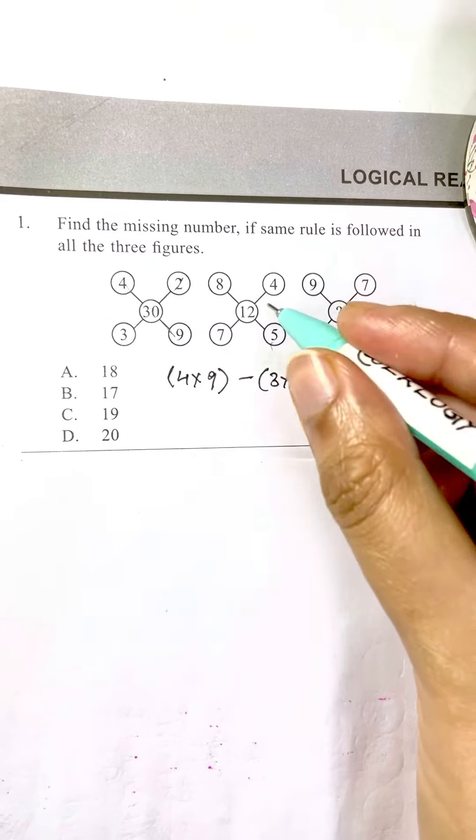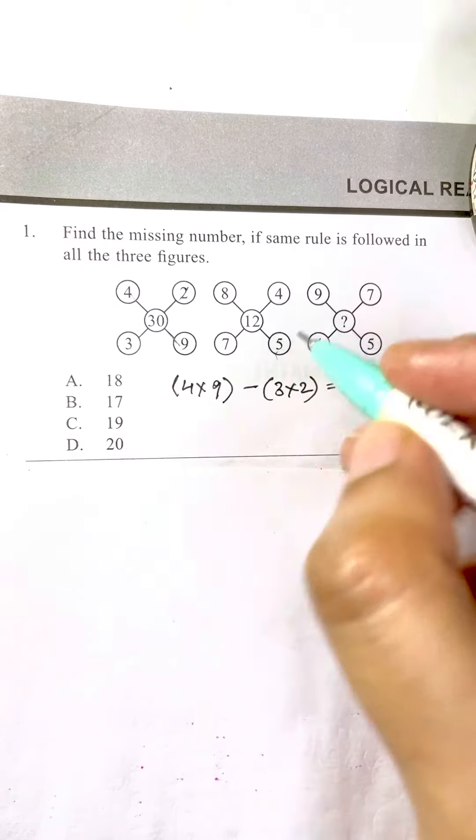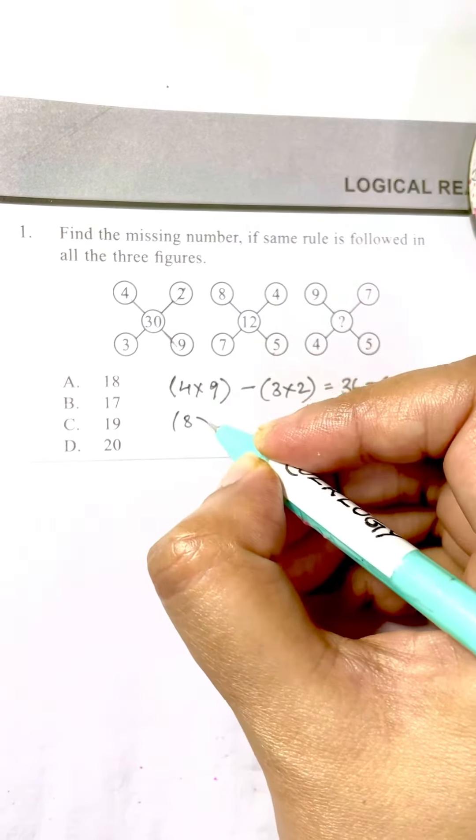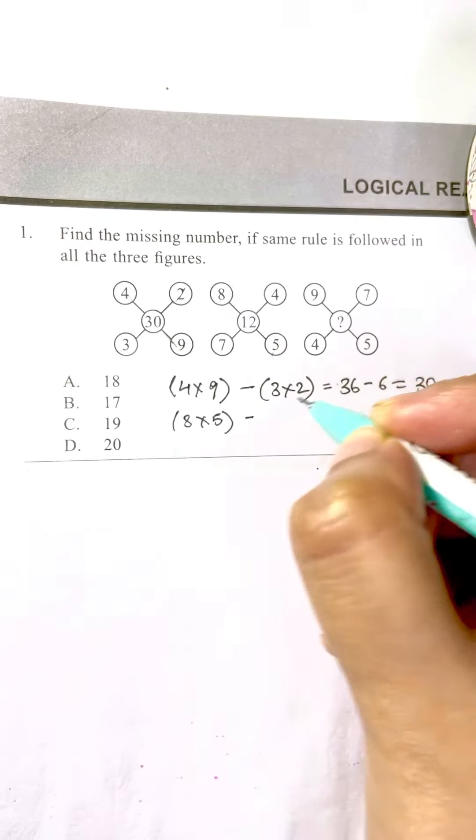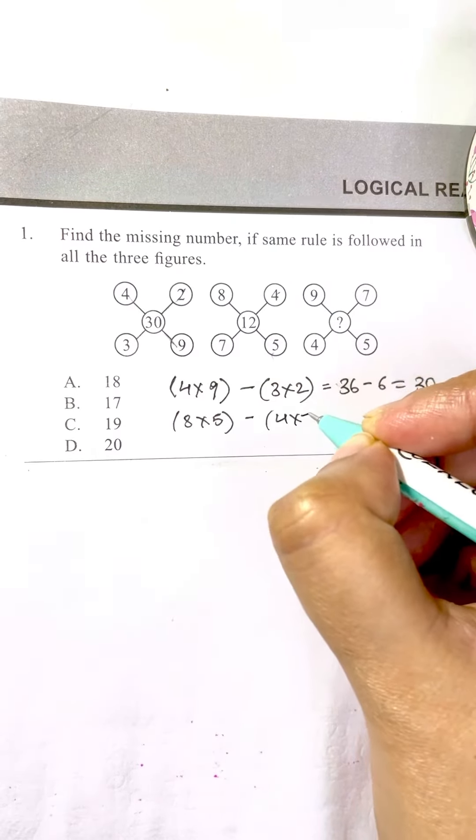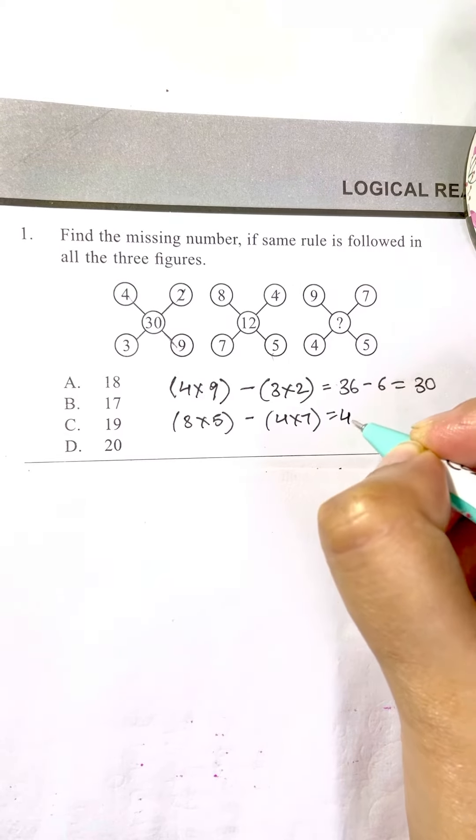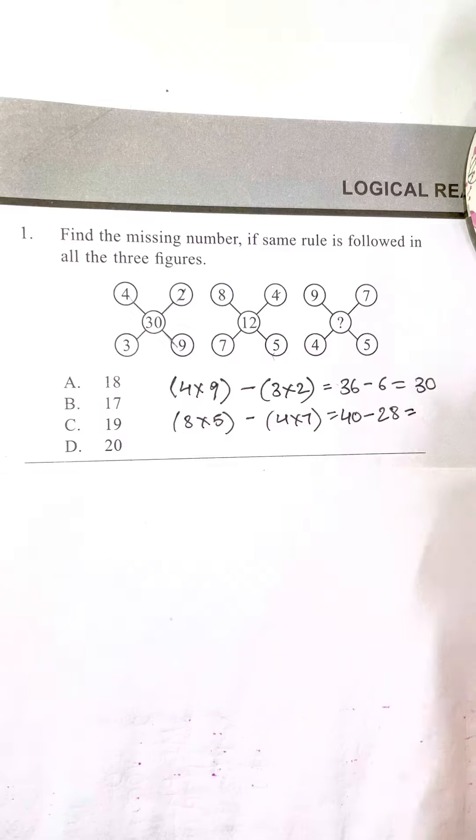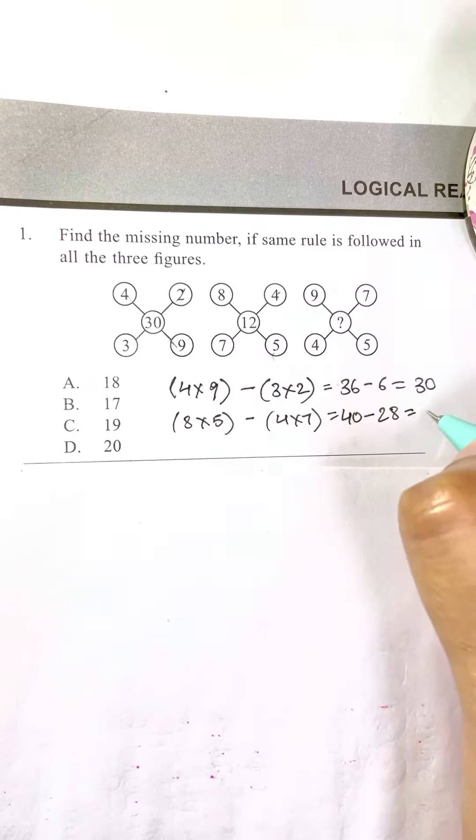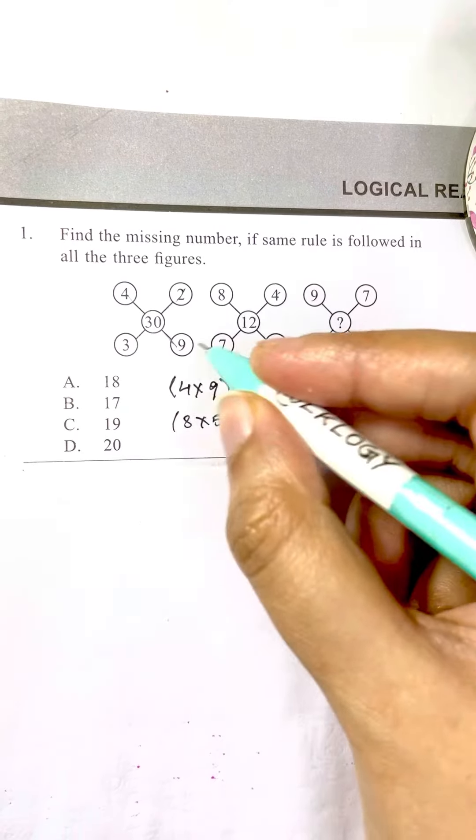Let's apply the same thing here. Eight times five minus four times seven. So I'm going to have 40 minus 28, and that's equal to 12. That's your answer, so in the second figure also the same logic is applied.